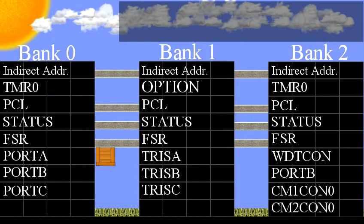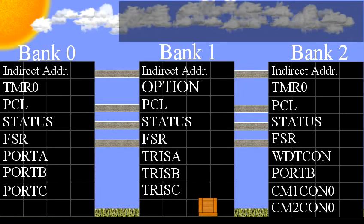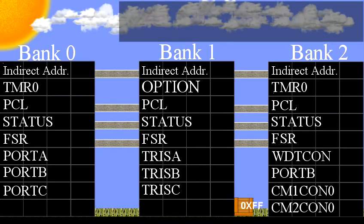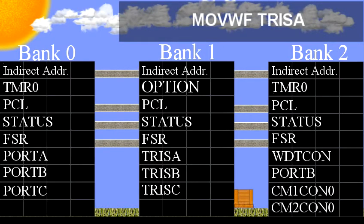Next, we copy the value in the working register into Port A with the command MOVWF Port A. Now let's pretend we have to access the register TRIS-A to change its value. We just need to repeat the above steps and the code would look like this: BANKSEL TRIS-A, MOVLW 0xFF, MOVWF TRIS-A.